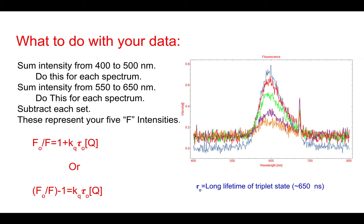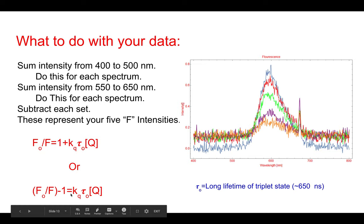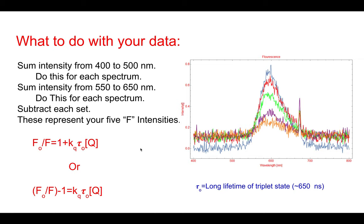So you're going to have a line with four points and you're going to get a slope. The slope of that is KQ·τ0. Tau-zero is your lifetime at zero quencher concentration — that's 650 nanoseconds, 650 × 10^−9 seconds. So you take this slope, which gives you KQ·τ0, and divide by 650 × 10^−9 to get KQ, the quenching rate constant.